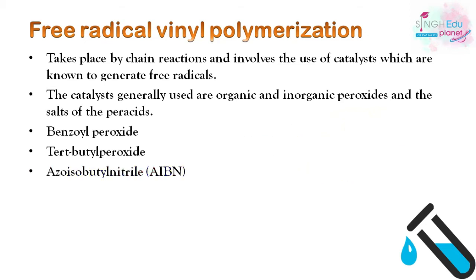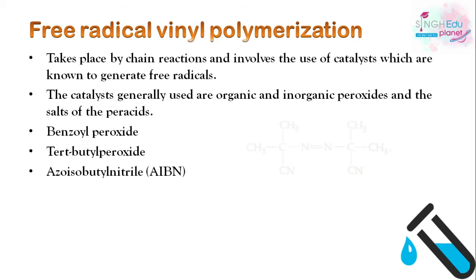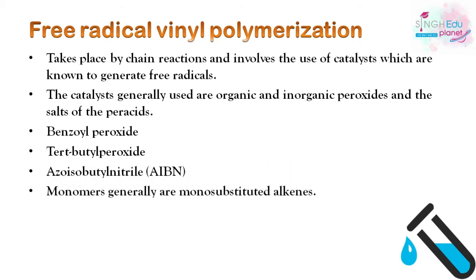Another initiator is azobisisobutyronitrile (AIBN), which has an N=N bond joining two tertiary butyl carbon groups. The monomers generally used are monosubstituted alkenes, for example vinyl chloride (CH₂=CHCl) and styrene (CH₂=CH-C₆H₅).